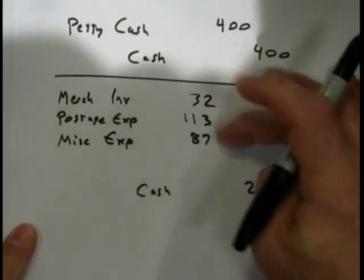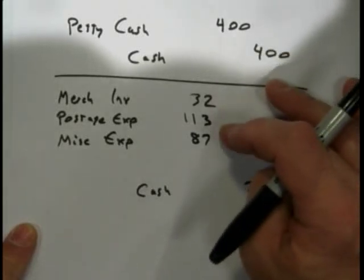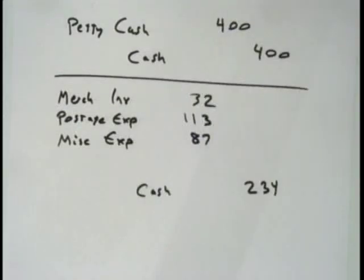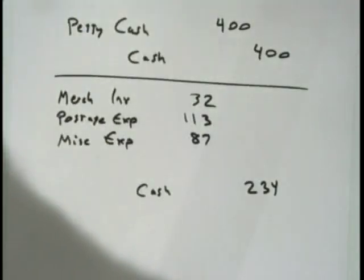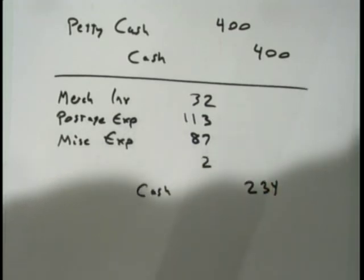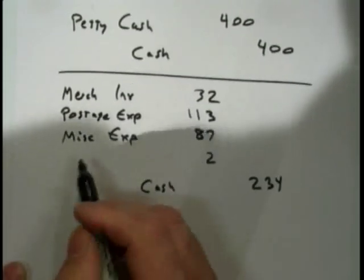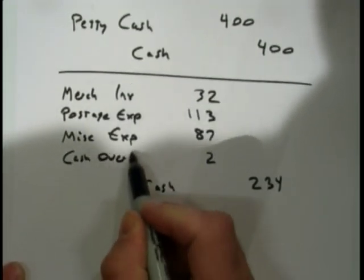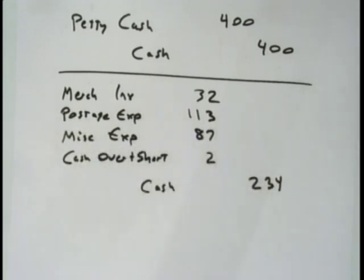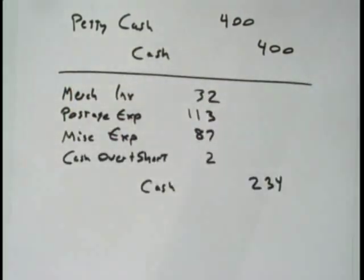Step three: does the journal entry balance? No — the debit side needs $2. We never put a minus sign in a journal entry, so we debit cash over and short for $2. They told us there was a $2 shortage, but we really didn't need them to tell us that — the third step figures it out automatically. If you do the steps in order, you'll be fine.